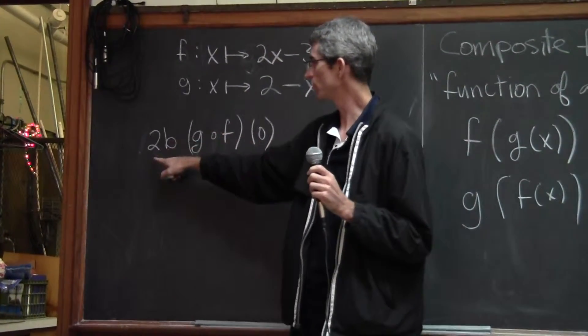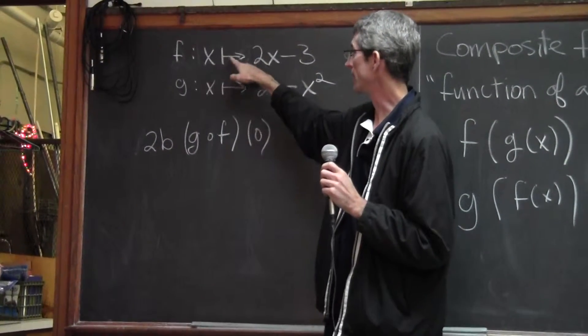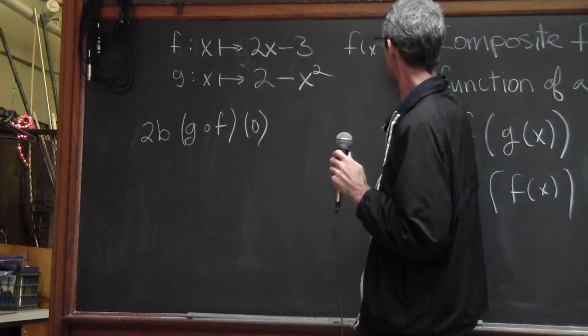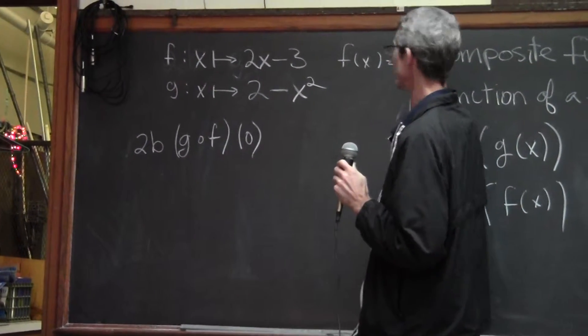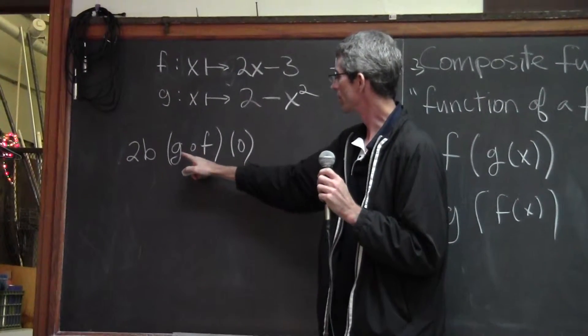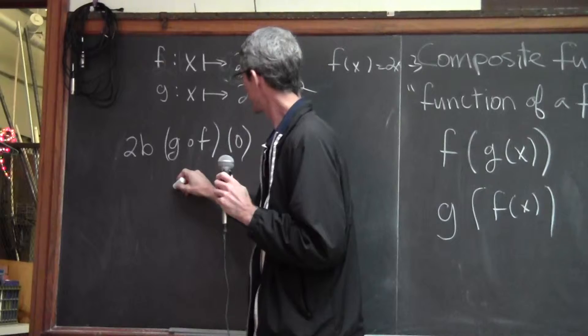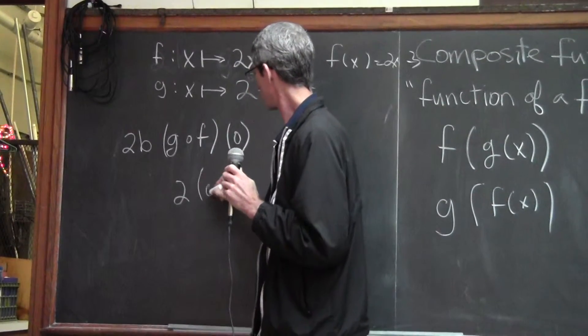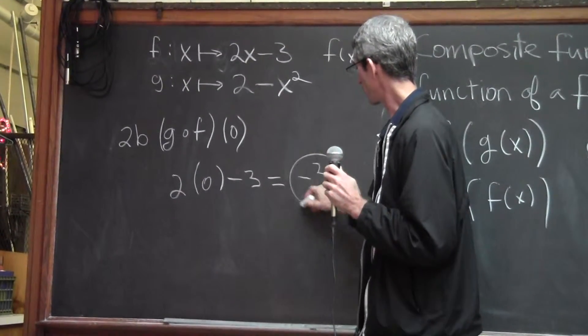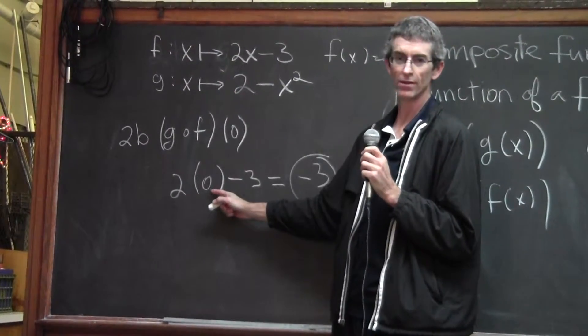So this problem, this is problem 2b, we had two functions and this is another way of writing functions. x with that little line and arrow. That's the same thing as just saying f of x equals 2x minus 3. But that's just another way of writing it. So you want to do this one first. You want to know what is this equal when x is 0. So you plug in 2 times 0 minus 3. That's going to be 0 minus 3. That's negative 3. So that's what f of x is equal to when x is 0.